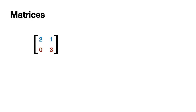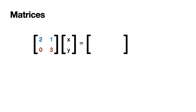Let's begin with a matrix, for example this one with entries 2, 1, 0, and 3. Matrices transform vectors into others by way of matrix multiplication. To calculate the product of this matrix and the vector with entries x, y, we take each row of the matrix and combine it with the column vector — this is called the dot product — and we obtain the vector with entries 2x plus y and 3y.